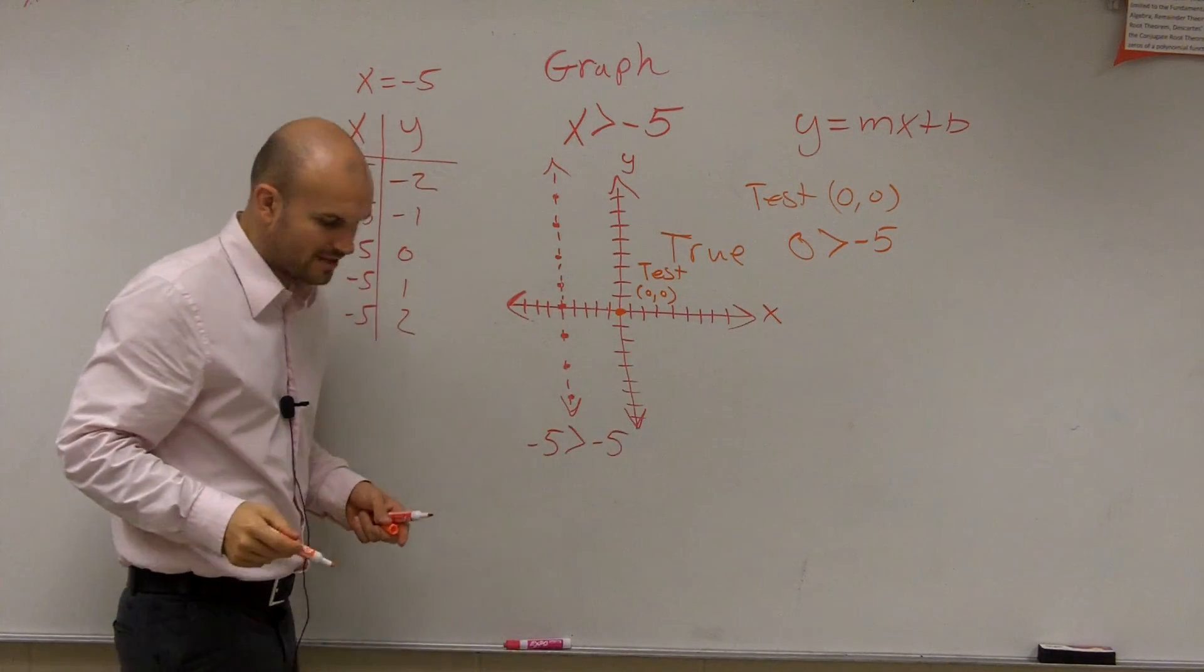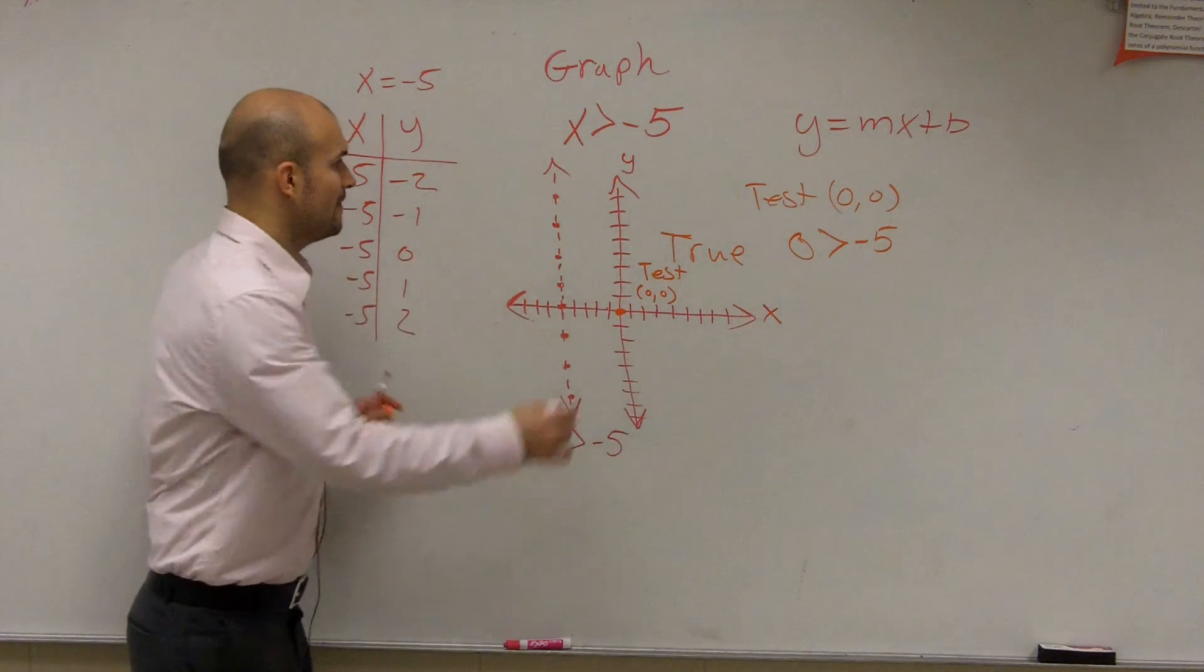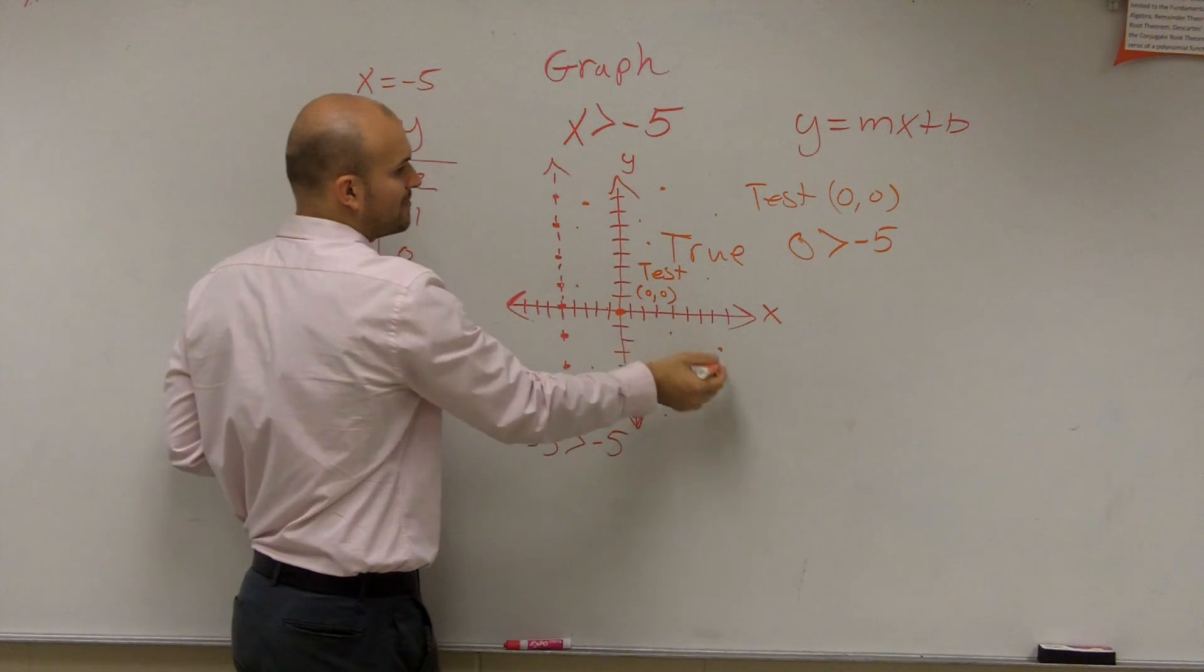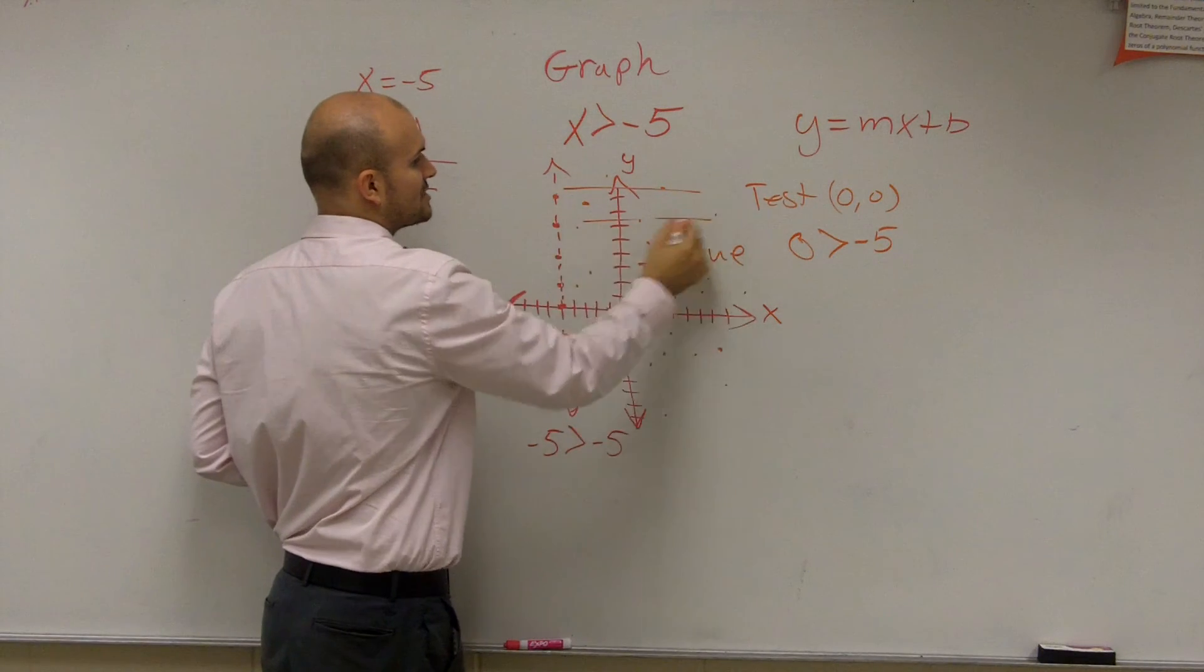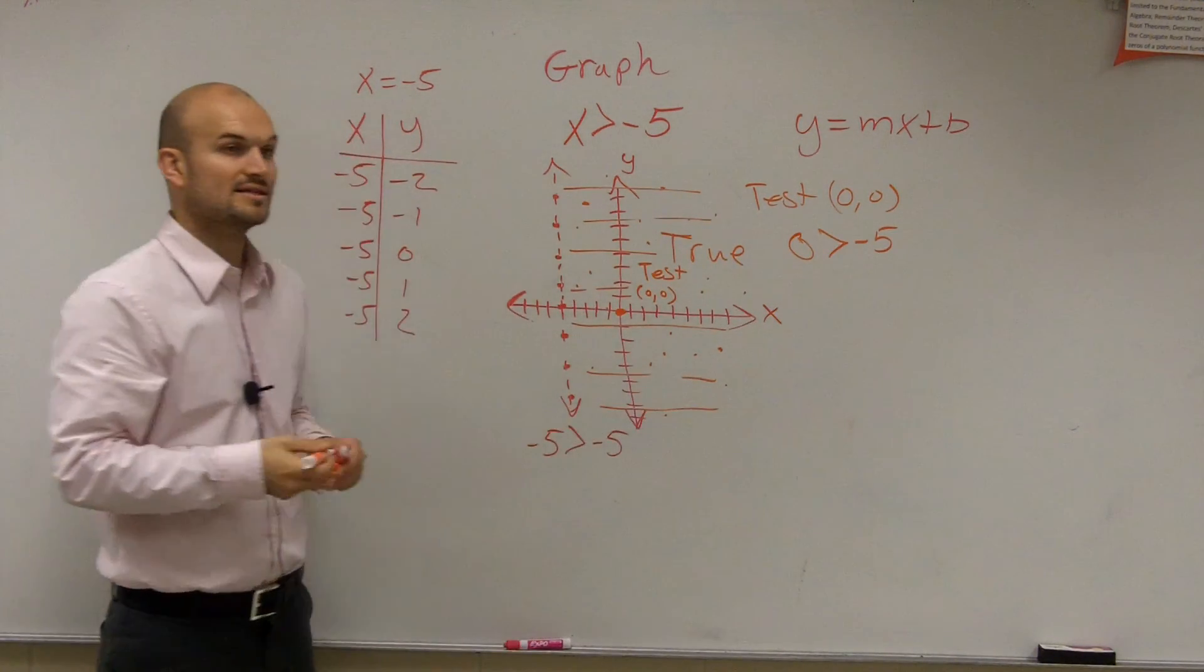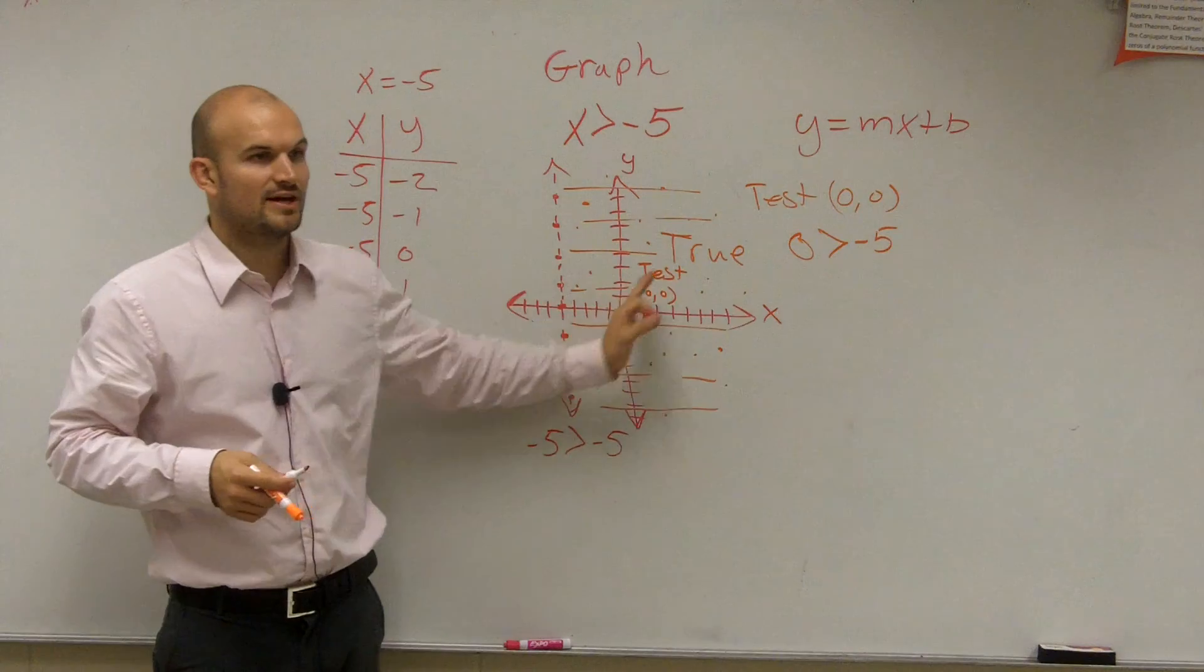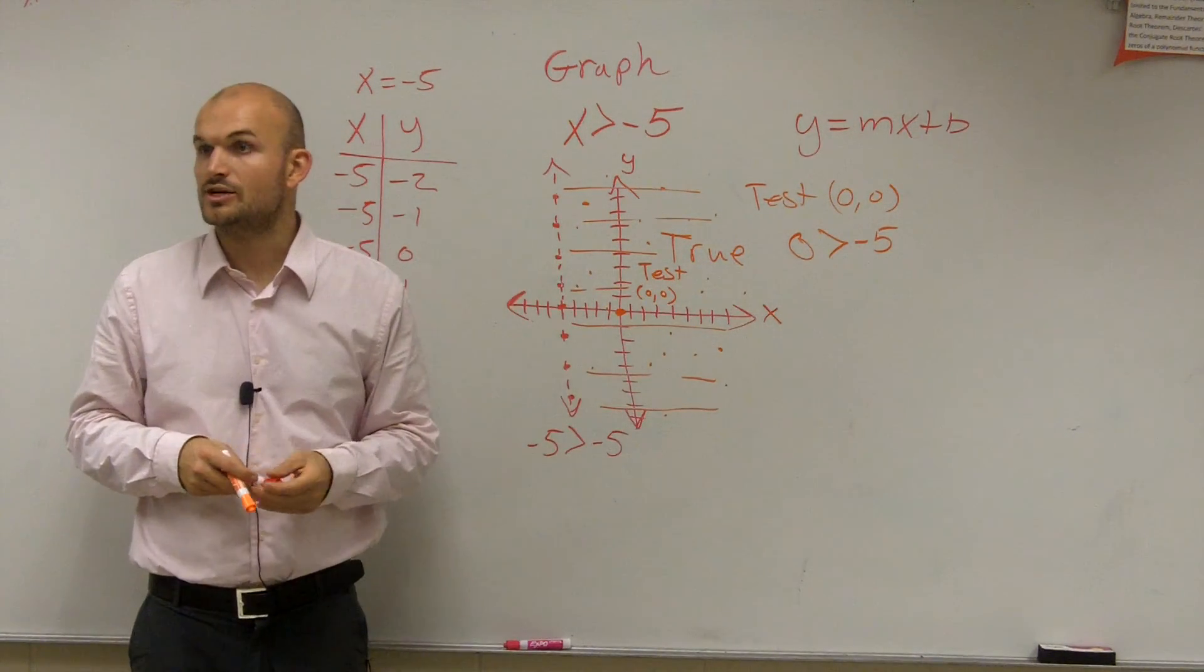And remember, what we talked about inequalities. If one point to the right of a line is true, that means that point is true. All the points to the right are true. Now, rather than showing you every single infinite point, it'll take me forever to do that. So we just draw lines to represent all the points to the right of this line represent the solution, meaning all the points to the right are true. Because think about it, all the x values to the right are going to be greater than negative 5. Makes sense. So that's how you graph. Any questions?